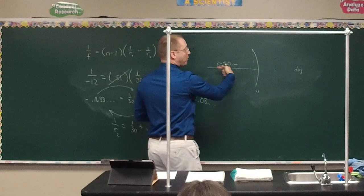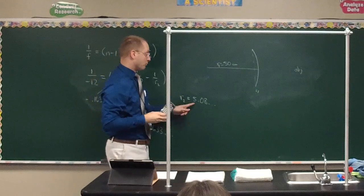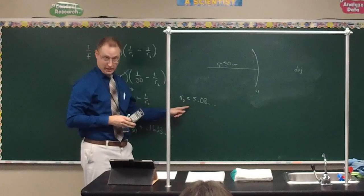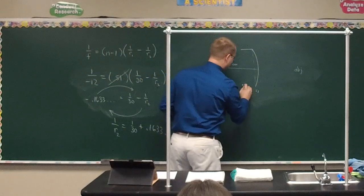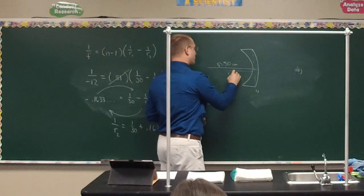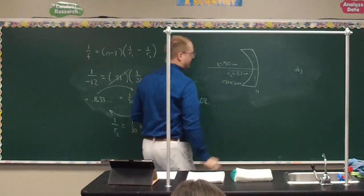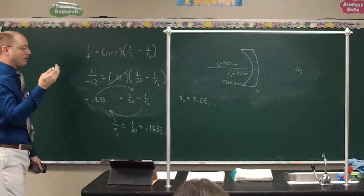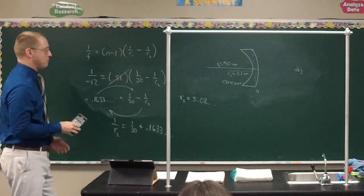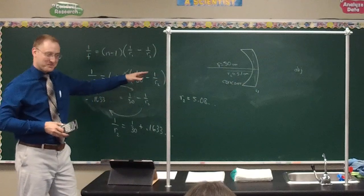R2 = positive 5.08 centimeters means the radius of this second side goes away from the object — so it is concave, and very concave at that, with only a 5.1-centimeter radius. This is probably somewhat similar to what my own lenses look like: the curvature on the inside of the lens is dramatically greater than the curvature on the outside.